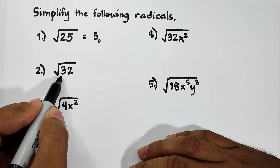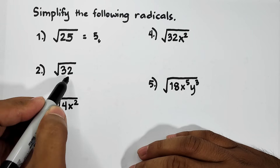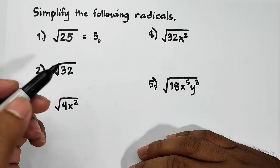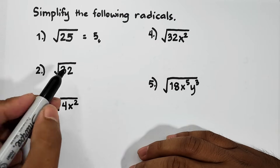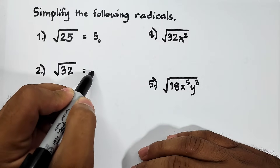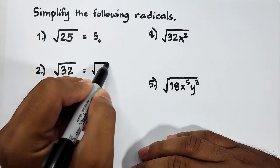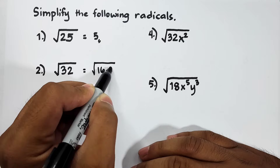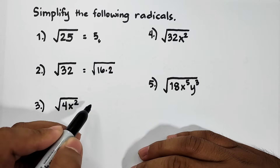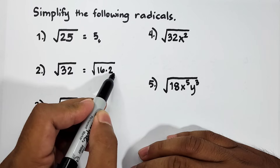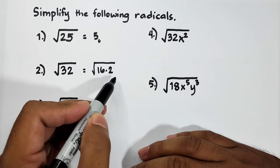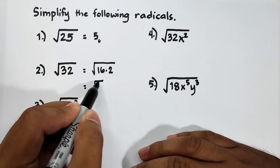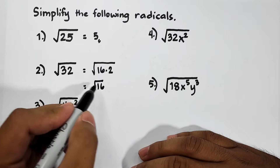What you need to do here is to factor out 32 wherein one of the factors is a perfect square. The factors are 16 and 2. So as you can see, 16 times 2 is 32. So it will become the square root of 16 times the square root of 2, by the product property of radicals.